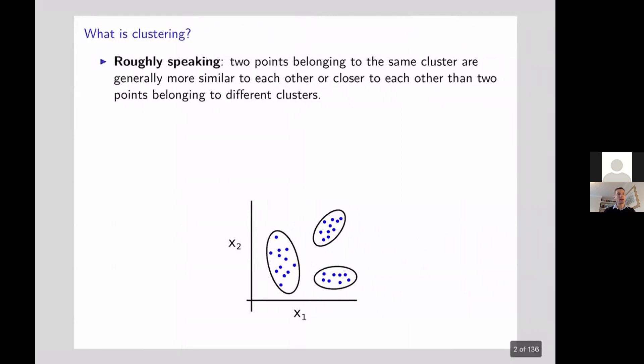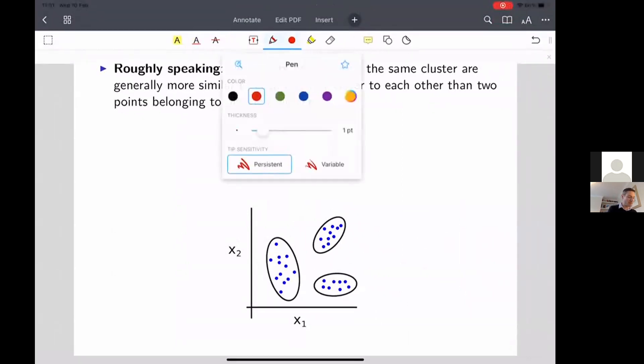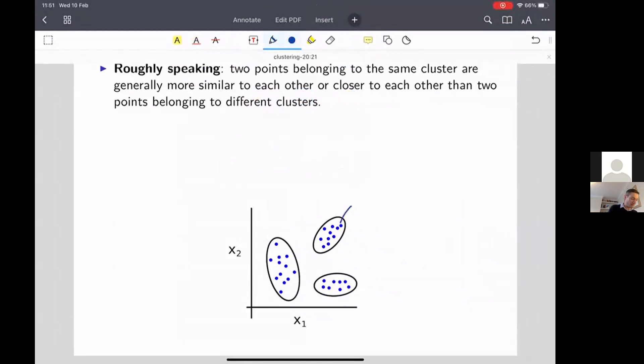So first off, what is clustering? The idea is to produce a machine learning algorithm that can take in a data set. Below in this cartoon picture at the bottom of the slide here, you can see a fairly toy data set which comprises these blue dots, these are our data points. Each data point here is a two dimensional vector. So xn is a two dimensional vector which has a component x1 and a component x2, and these will vary for each one of the n data points.